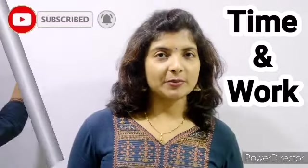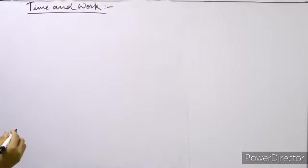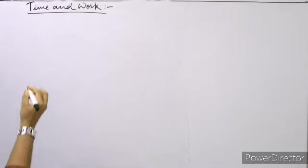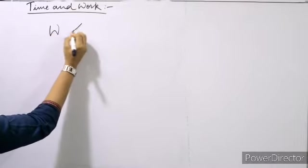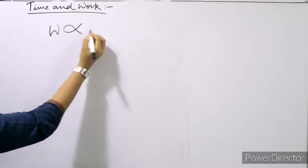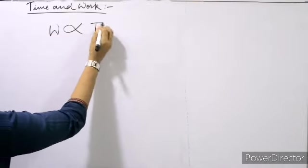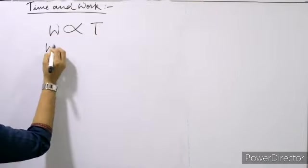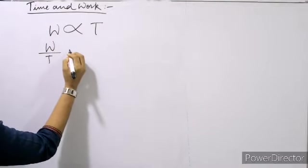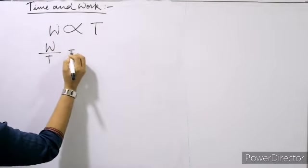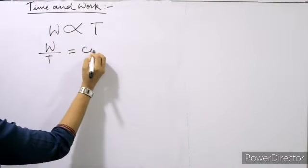I hope you are watching my videos. If you like it, don't forget to subscribe to my channel. What is time and work? The quantity of work is directly proportional to the time taken, so W upon T will be some constant.